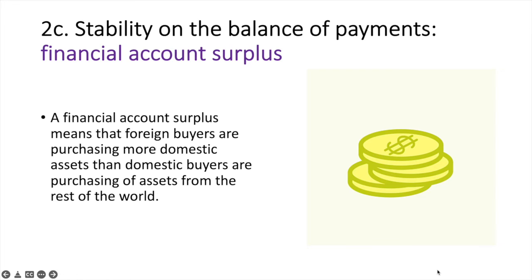A financial account surplus means that foreign buyers are purchasing more domestic assets than domestic buyers are purchasing of assets from the rest of the world. This will mean that interest payments and dividends being paid out to the rest of the world will increase, raising net primary income paid to the rest of the world in the current account. A financial account surplus can be beneficial if FDI flows are entering the country and creating jobs and reducing unemployment. However, increasing FDI also results in increasing demand for the domestic currency and can cause it to appreciate in foreign exchange markets, potentially having an adverse impact on exports.